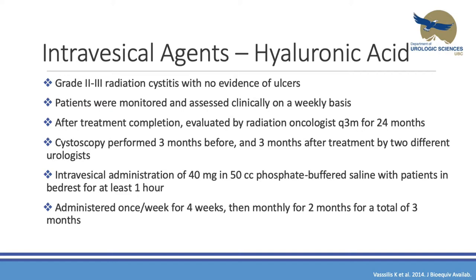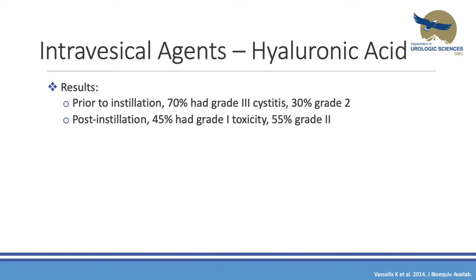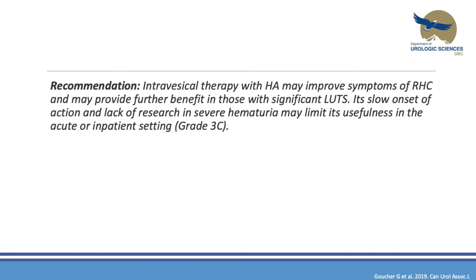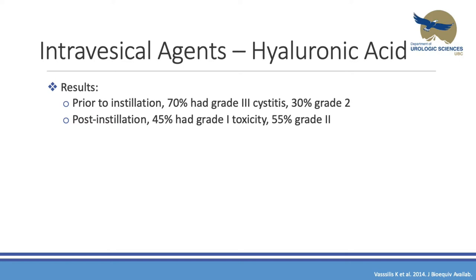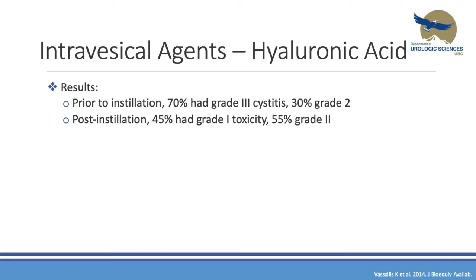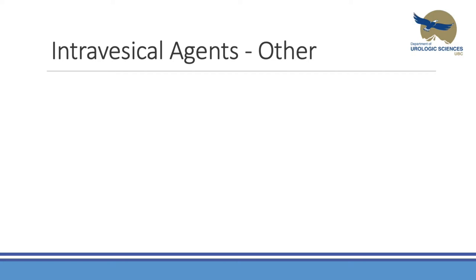The results were reassuring: prior to instillation, 70% of patients had grade three cystitis and 30% had grade two. Post-instillation, 45% had grade one, 55% had grade two, and nobody had grade three anymore. Hyaluronic acid is an option — I haven't seen it used here, but it is available. The therapy may improve symptoms and provide benefit, but it is slow and there is a lack of research for severe hematuria. There is no data for grade four or five presentations, and this was the best study available with only 20 patients.